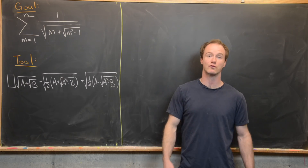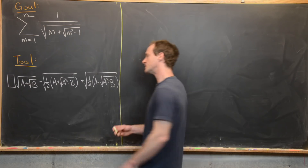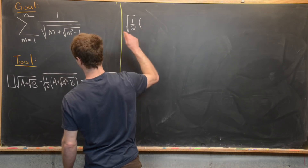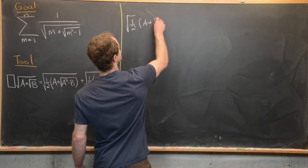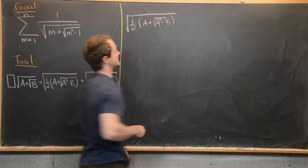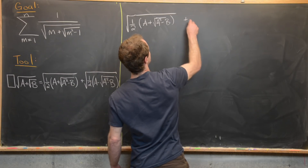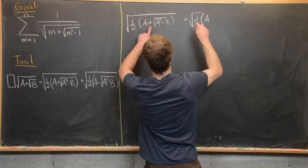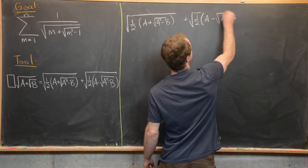We're going to start with the right-hand side of the equation and work towards the left-hand side. The right-hand side looks like the square root of one-half times the quantity a plus the square root of a squared minus b, plus the square root of one-half times the quantity a minus the square root of a squared minus b.